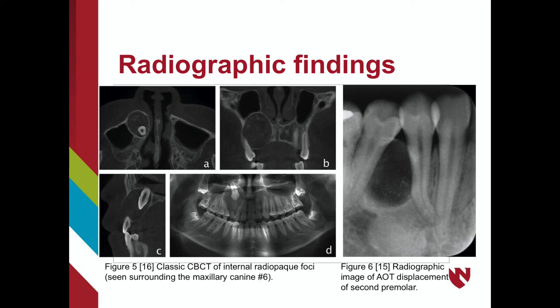In Figure 6, a 22-year-old female presents with an interradicular AOT in the anterior mandible. Notice the distal root displacement of the second premolar, the smooth sclerotic margins, and the absence of root resorption.